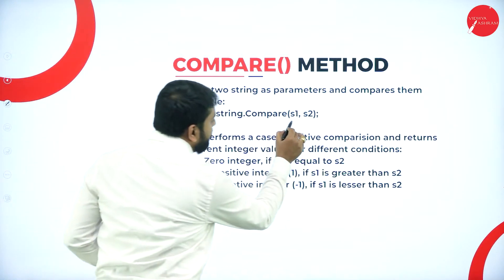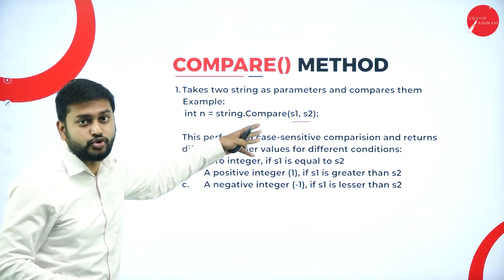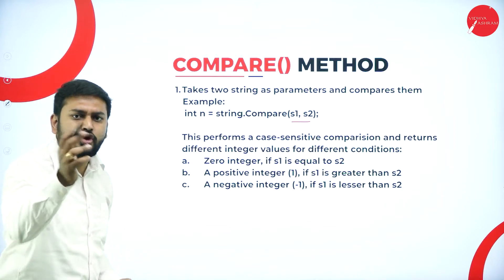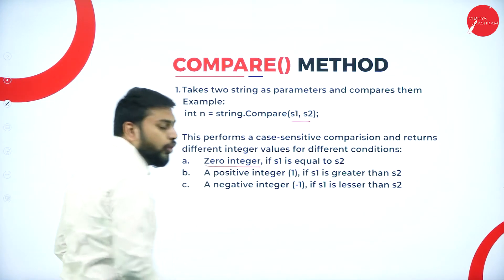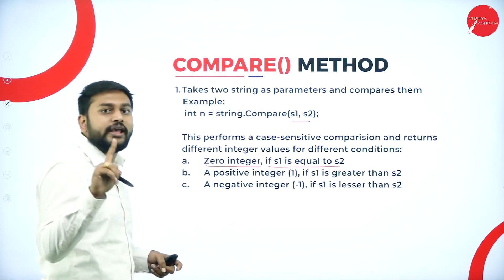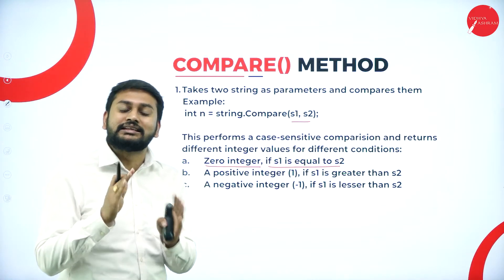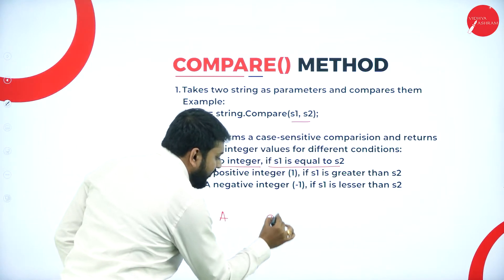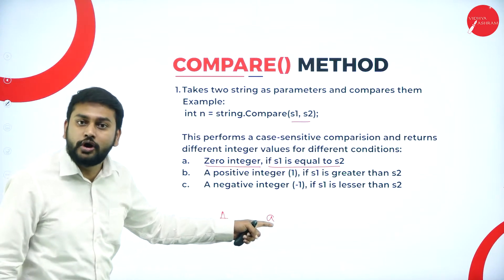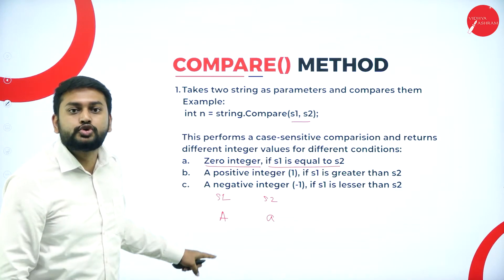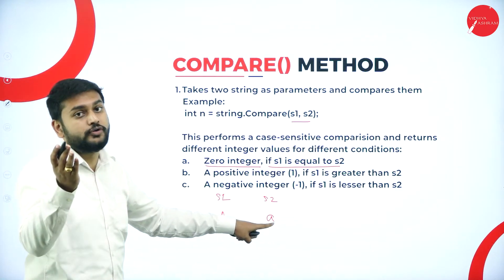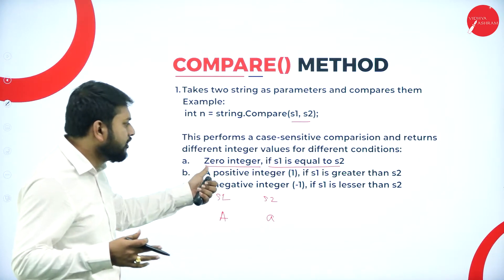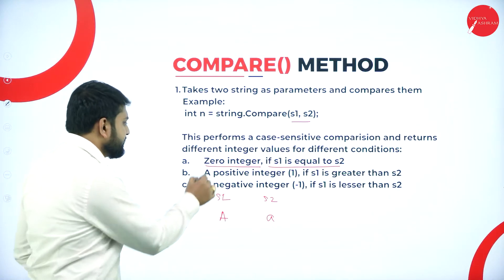When it comes to the compare method, I will be passing two different strings — s1 and s2. Once it compares, it returns an integer value. It returns zero when both s1 is equal to s2. How exactly is it comparing? It compares using the ASCII values of the characters. For example, capital A is different from small a because the ASCII value for both characters is different — that's how the comparison happens. So if s1 is equal to s2, it returns zero.